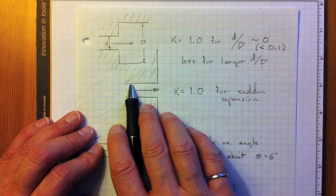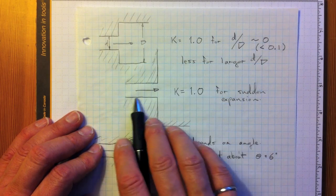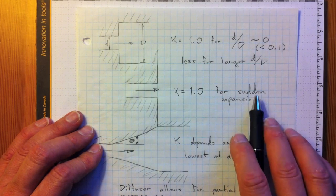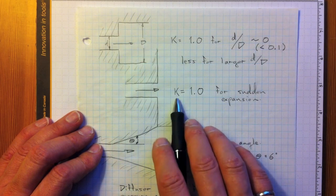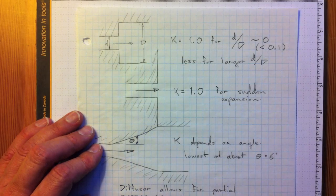We could have a very slow expansion here, a diffuser, in which case we could reduce that loss coefficient considerably because we get pressure recovery.